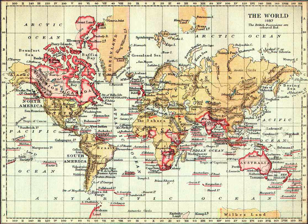Under the British North America Act 1867, Canada received the status of 'Dominion' upon the confederation of several British possessions in North America. However, it was at the Colonial Conference of 1907 when the self-governing colonies of Canada and the Commonwealth of Australia were referred to collectively as Dominions for the first time. Two other self-governing colonies — New Zealand and Newfoundland — were granted the status of Dominion in the same year. These were followed by the Union of South Africa in 1910 and the Irish Free State in 1922.